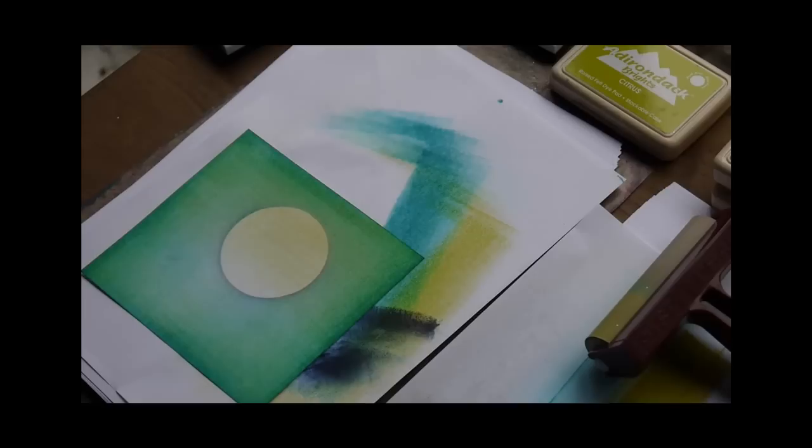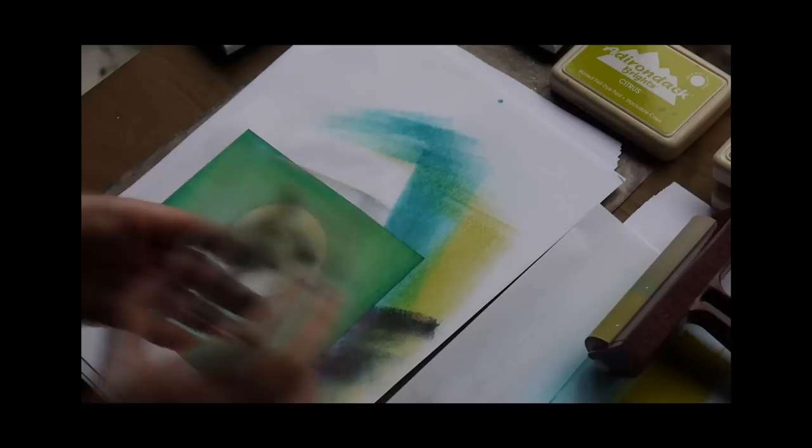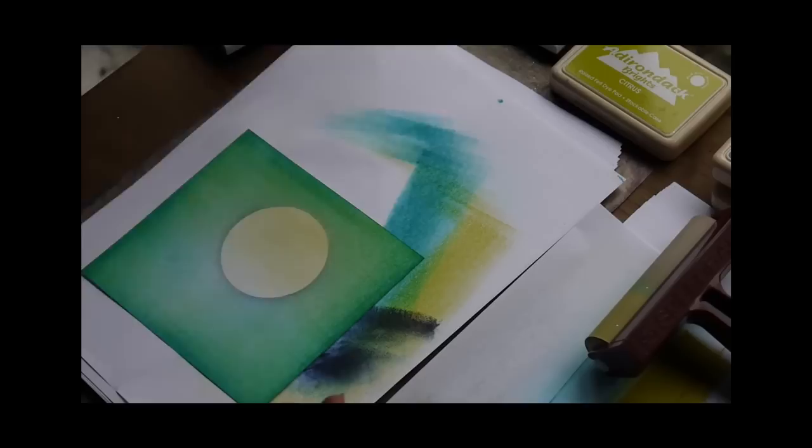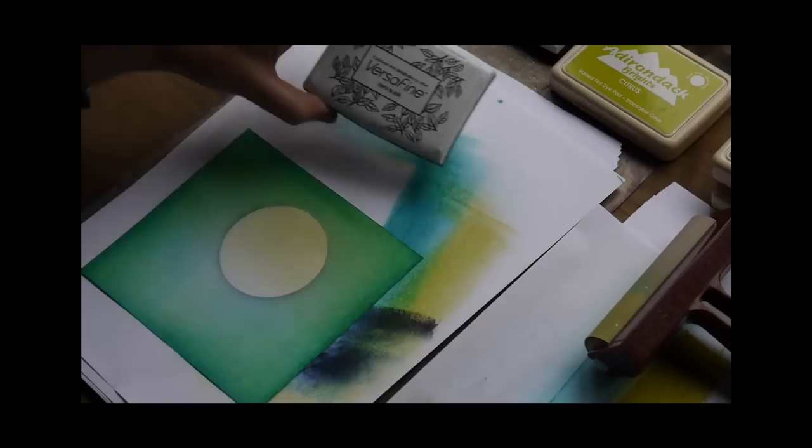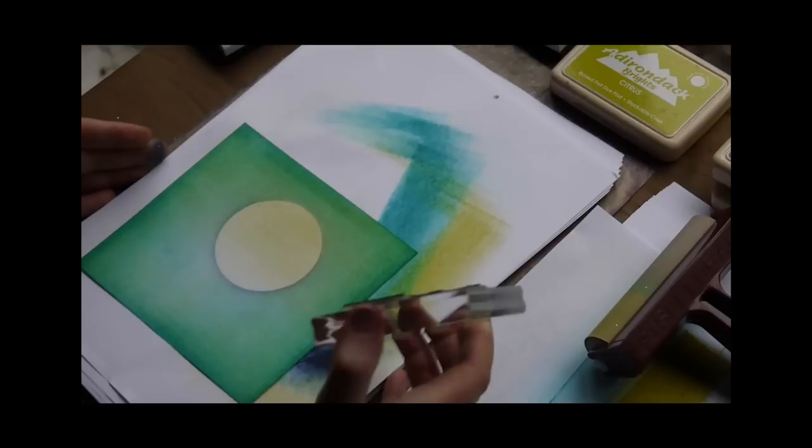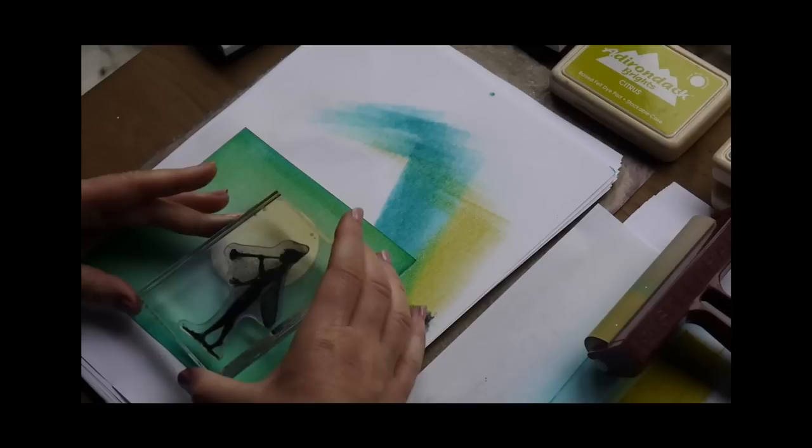Moving on to our stamps now I'm going to start with the fairy again and our diversifying onyx black so again inking up making sure that the fairy is completely covered. Diversifying it's a really nice ink because it depicts detail one of my favorite ink pads but that's my personal preference okay so we're going to pop the fairy just slightly right off the moon here give her a good press down.